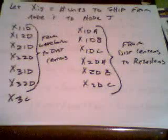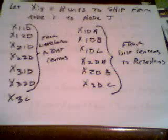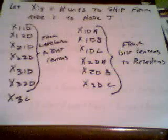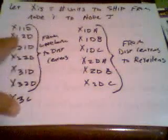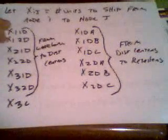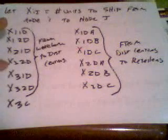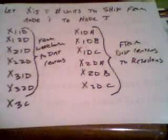Let X_ij equal the number of units to ship from node i to node j. So from the warehouse to the distribution center, we've got these six variables, X_1D, X_12D, X_21D, X_22D, X_31D, X_32D.